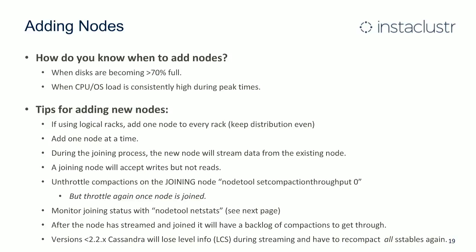You can monitor joining status with nodetool netstats — it shows you how much data is still being streamed. One final note: if you're using LCS and a version of Cassandra before 2.2.x, the level information is not preserved on streaming. That means the entire dataset needs to be compacted through every level, which can take days if not weeks. In later versions of Cassandra this has been fixed and level information is preserved, so only normal compaction is needed.